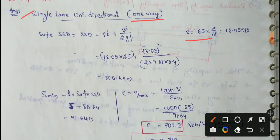65 km per hour, we can convert 65 into 5 by 18. This simplifies us, our value is 18.05 m per second.